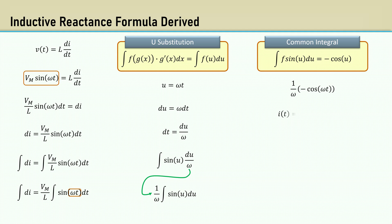Bringing Vm over omega L, we get the current is V max over omega L times the negative cosine of omega t.